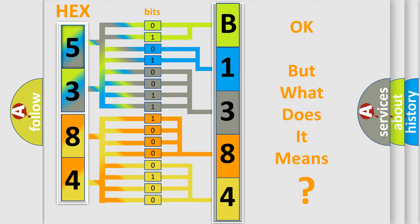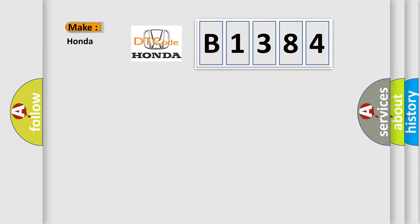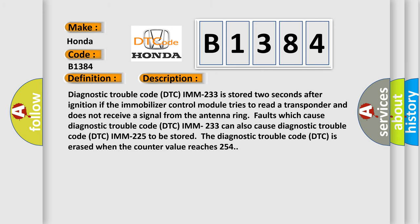The number itself does not make sense to us if we cannot assign information about what it actually expresses. So, what does the diagnostic trouble code B1384 interpret specifically for Honda car manufacturers? The basic definition is: Antenna ring, no connection. And now this is a short description of this DTC code.